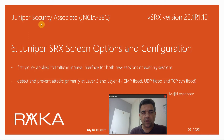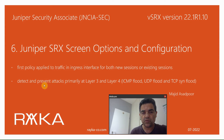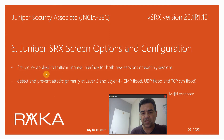Welcome to another video of the Juniper Security Associate course. In this section, I will talk about Juniper SRX screen policy options and configuration, which is used to detect and prevent attacks primarily at layer 3 and layer 4, like ICMP flood, UDP flood, and TCP SYN flood.